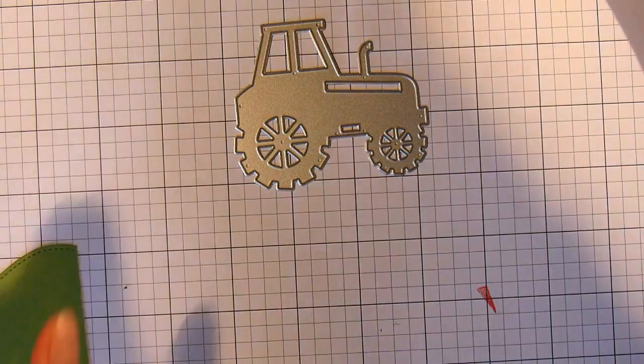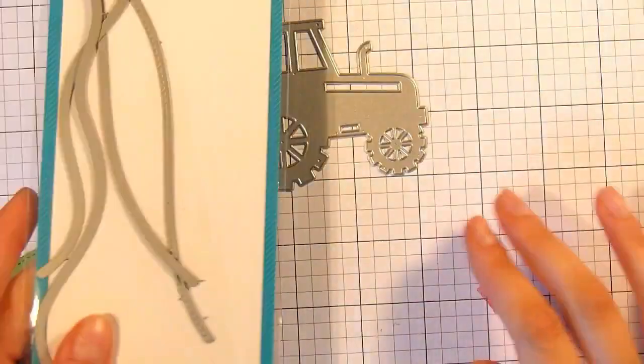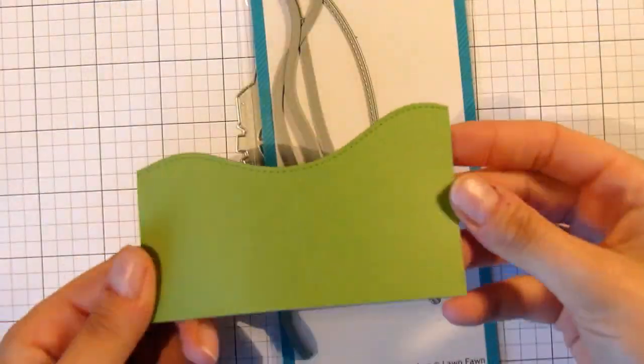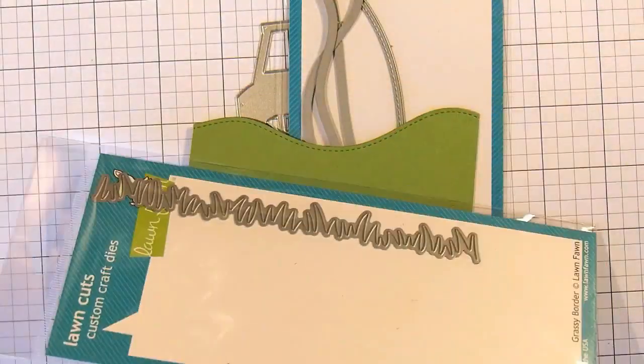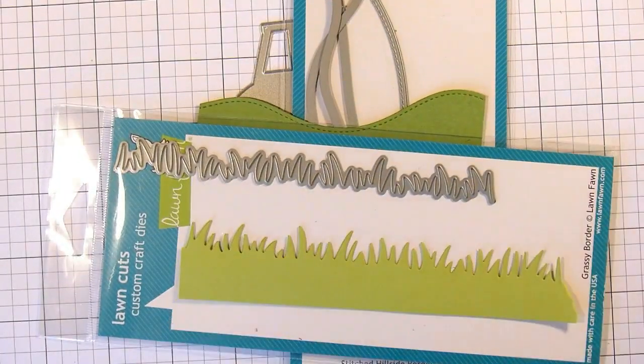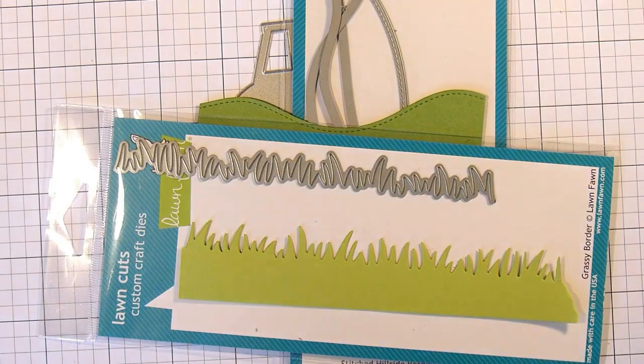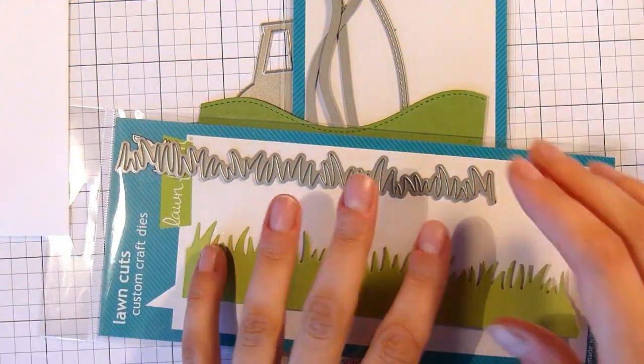This little tractor here is the focal point and that is one from AliExpress. I'm going to use the Lawn Fawn Stitched Hillside Borders to cut out this darker green cardstock and then I'm going to use the Lawn Fawn Grassy Border to cut out this piece of grass for the bottom.